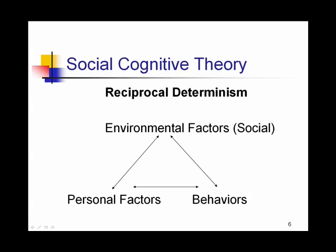There are environmental factors, personal factors, and behaviors. Environmental factors, which are the social part of his theory, interact with personal factors, which is the cognitive part of his theory. Both of those factors then lead to certain behaviors. So learning is all about environment interacting with the cognitive domain and then leading to certain behaviors. He called this interconnectedness reciprocal determinism.